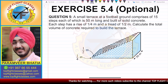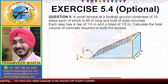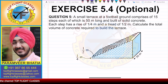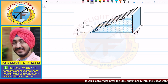A small terrace at a football ground comprises of 15 steps, each of which is 50 meters long and built of solid concrete. Each step has a rise of 1/4 meters and a tread of 1/2 meters. Calculate the total volume of the concrete required to build the terrace.